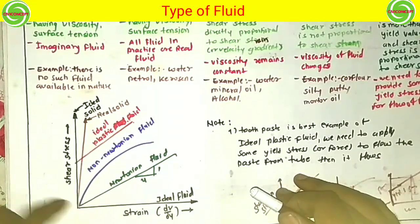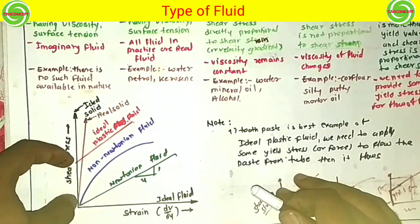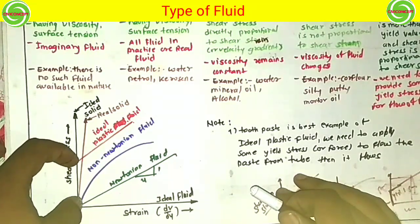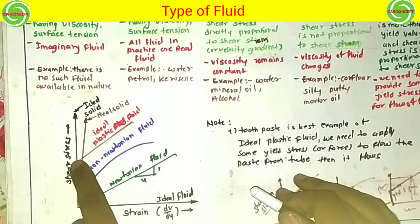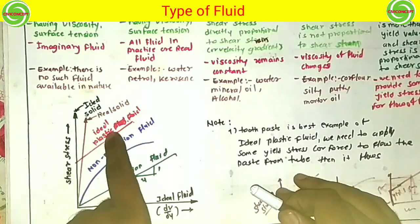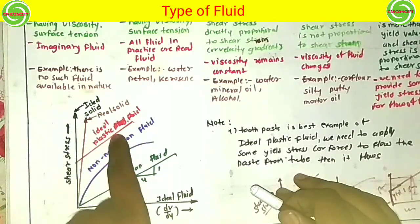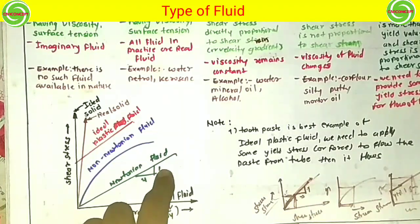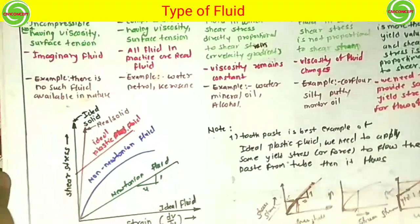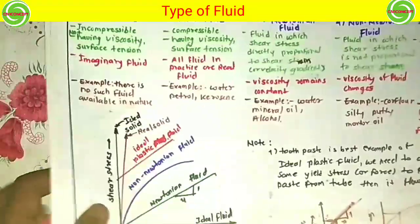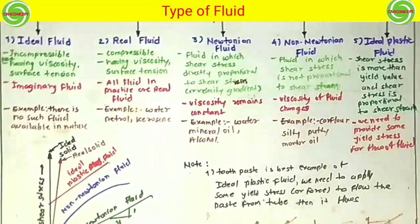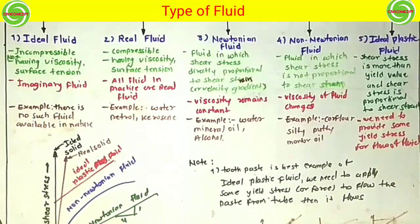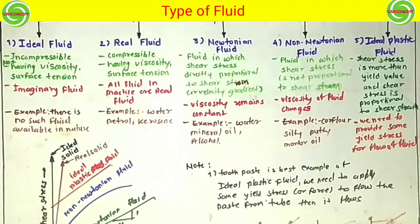In the ideal plastic fluid, we have to apply some yield stress for the flow of the liquid. Then it maintains the proportional relationship of shear stress to shear strain. This is the explanation of real fluid and ideal fluid types.